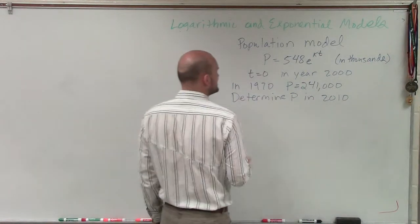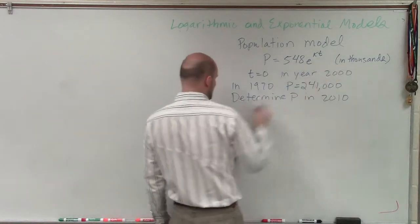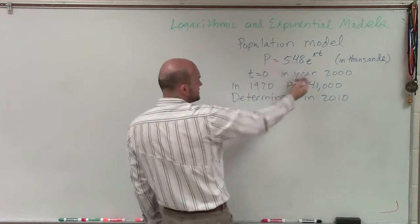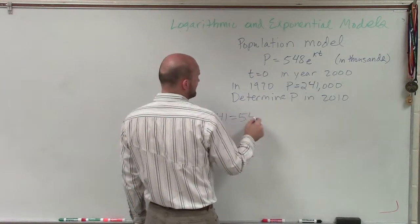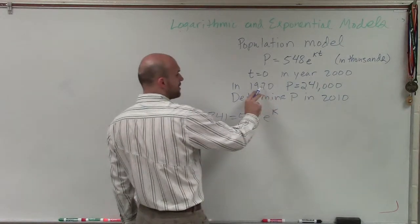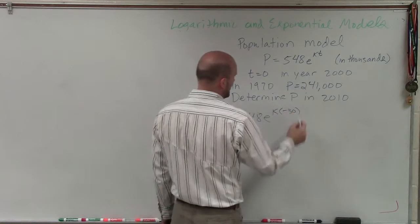So our population in 1970 was 241. And remember, I'm just going to write this in thousands. You can add the zeros if you want, but if you add the zeros here, you have to add them there. Equals 548 times e to the k. And now our t is going to be 30 years back, so that's negative 30.